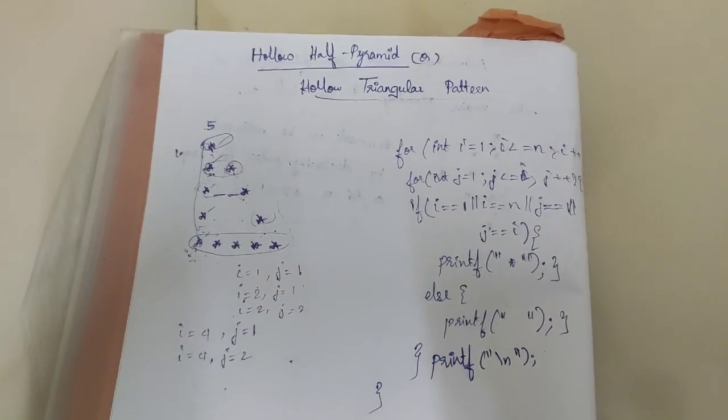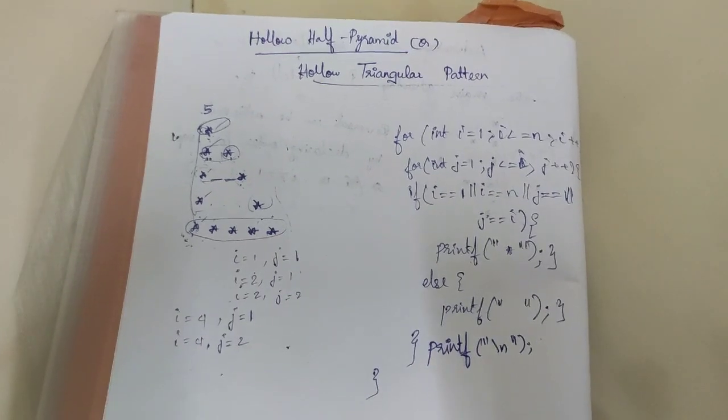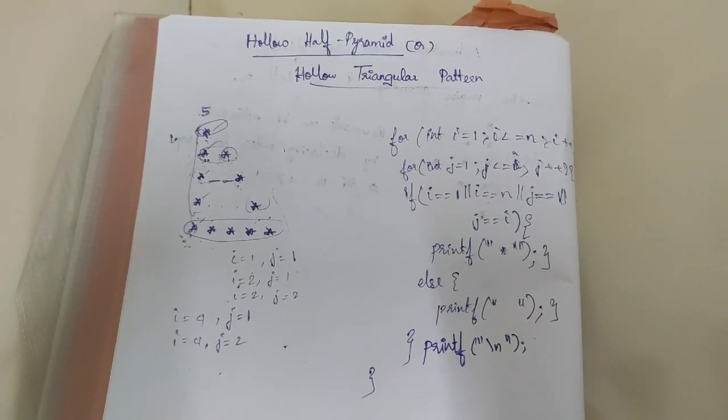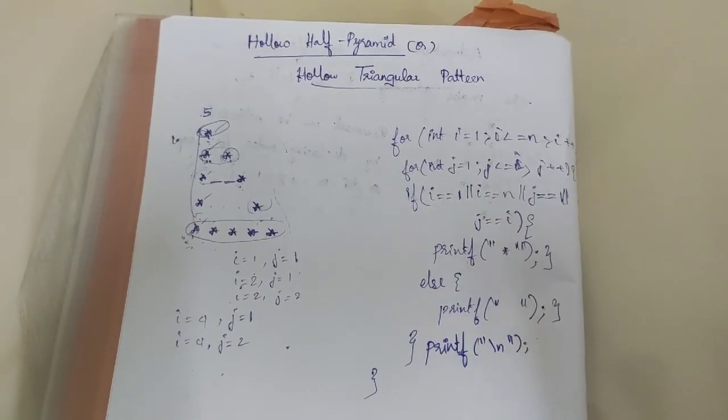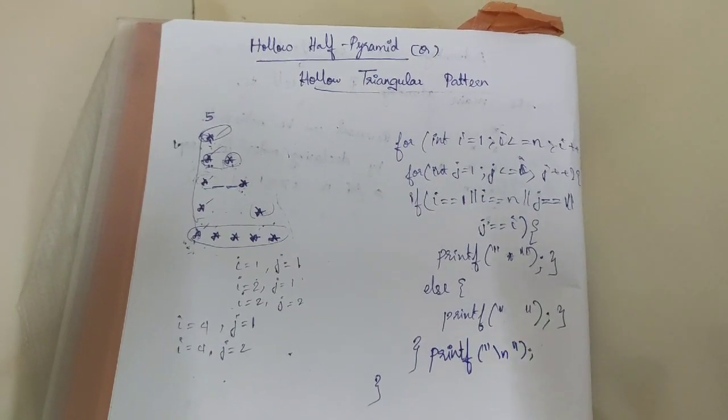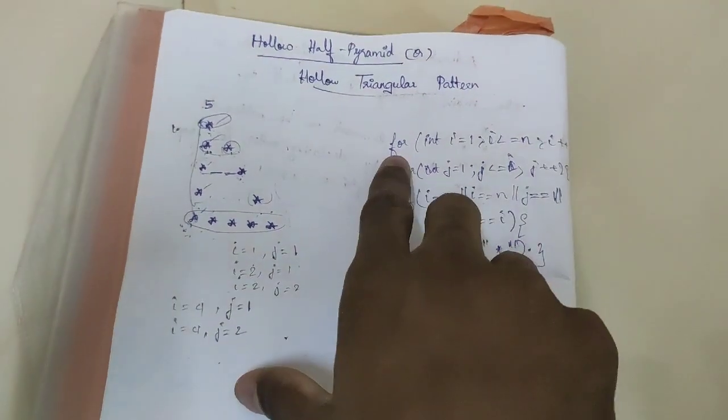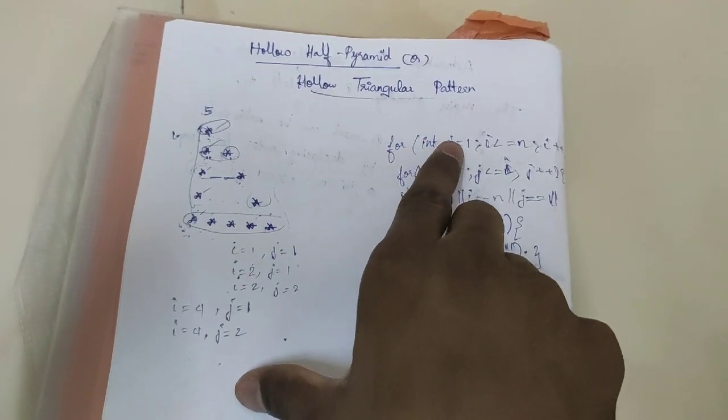In the previous video of printing hollow half pyramid, I made a mistake here. So we can see this as a rectified pattern of hollow half pyramid. For int i equal to 1, i less than or equal to n, i plus plus - this is the outer for loop.